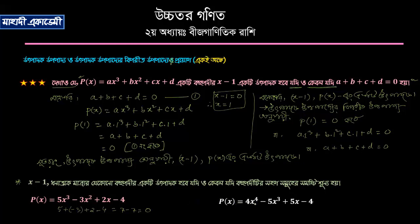3x equals 4x to the power 4 minus 5x cubed plus 5x minus 4. Let's look at the values: 4 plus 1 minus 5 minus 4. It becomes the same.